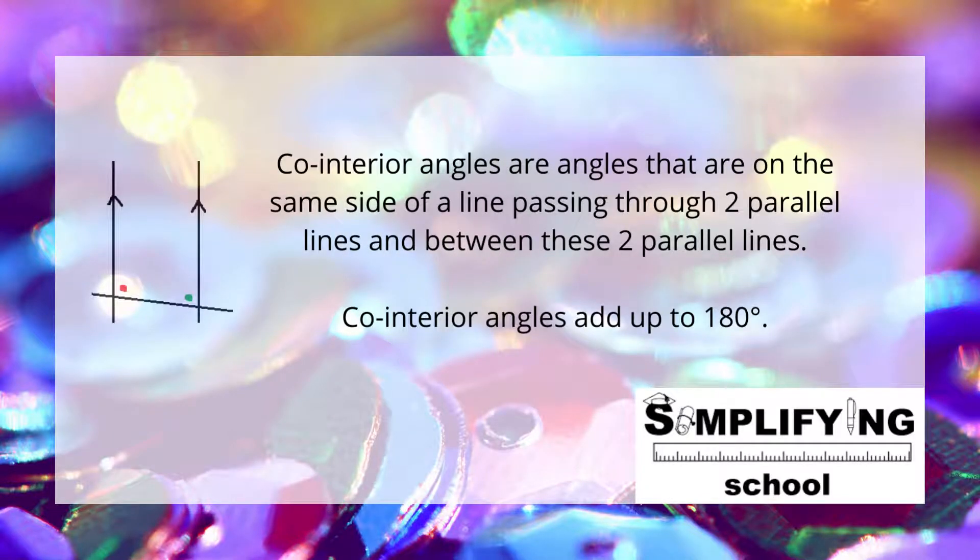Next up we've got the U, so we draw our U. Here we have the two vertical lines of the U that are parallel. Indicated on the drawing are co-interior angles. These angles are on the inside or closest together of the two parallel lines when one line passes through the two parallel lines. Co-interior angles add up to 180 degrees.